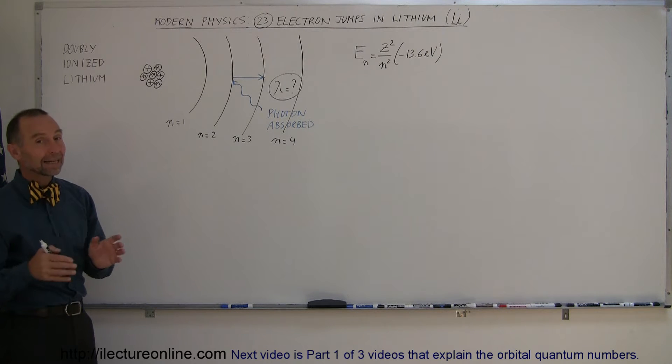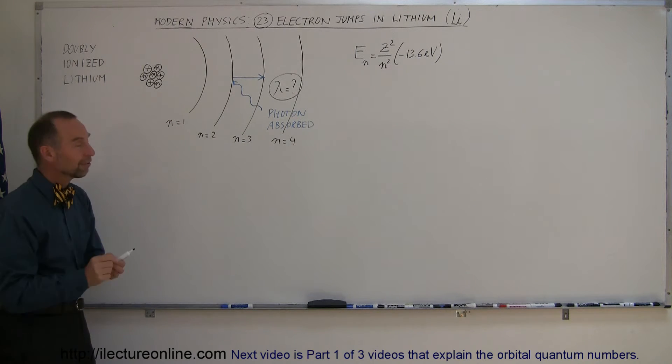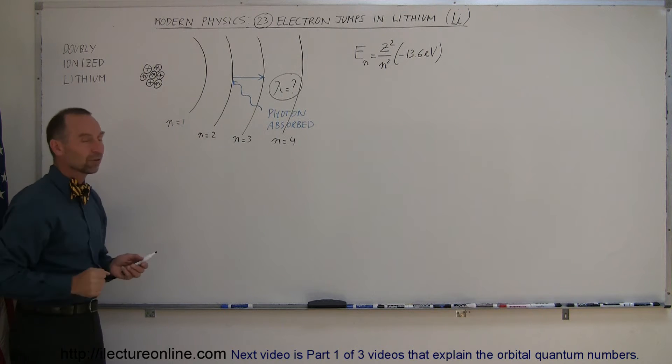We're going to have a doubly ionized lithium atom, which means that two of the three electrons are already removed. There's only one left, and when that one electron jumps up and down in the orbits of a lithium atom,